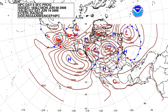The inaccuracy of forecasting is due to the chaotic nature of the atmosphere, the massive computational power required to solve the equations that describe the atmosphere, the error involved in measuring the initial conditions, and an incomplete understanding of atmospheric processes. Hence, forecasts become less accurate as the difference between current time and the time for which the forecast is being made increases. The use of ensembles and model consensus help narrow the error and pick the most likely outcome.